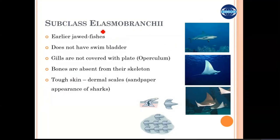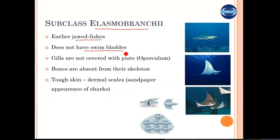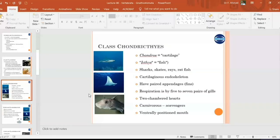Looking at Elasmobranchii — sharks are among the earliest jawed fish and do not have a swim bladder. The swim bladder is the part of the respiratory system where fish can gulp and store gases, which helps them float and maintain buoyancy in the water.